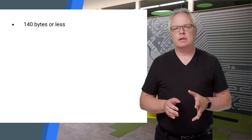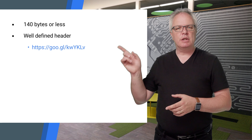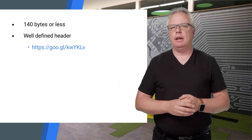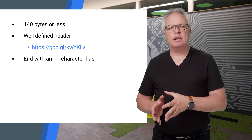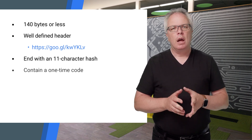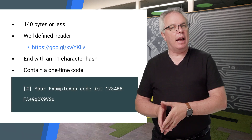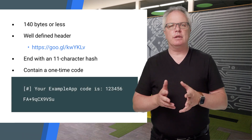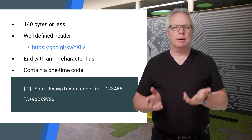The message needs to be constructed in a very specific way. First of all, it can't be longer than 140 bytes, and it does need to start with a well-defined header. See the documentation for your options on building that header here. It must also end with an 11-character hash that identifies your app. The one-time code can be anything you want as long as it's unguessable. The easiest way to do this is to simply generate a random number or a string comprised of random numbers and characters.